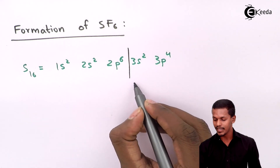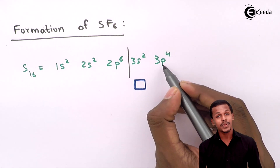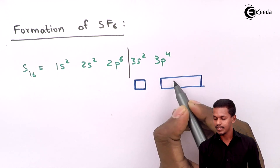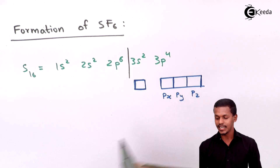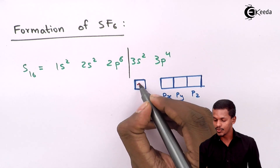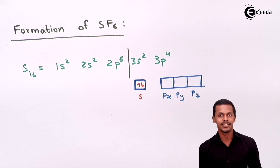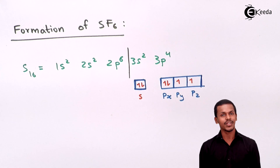The s orbital is represented as a box, and the p subshell consists of three orbitals: px, py, and pz. Filling the electrons, the 3s orbital has two electrons, and on the p subshell there are four electrons total. Following Hund's rule, we place them as one, two, three, and four — so four electrons are present in the p subshell.